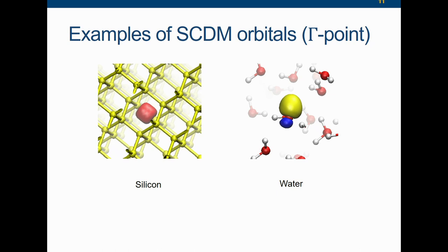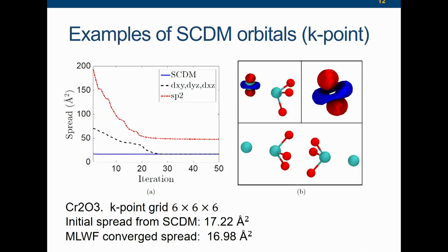This is only for the valence band. Here is a more recent result with k-points, from a system obtained from Steve Lewis and former group member Sinisa Cole. He was working on the chromium oxide example, which is kind of challenging because it's spin-polarized and you have competition between the d orbitals and the p orbitals. If you directly run Wannier90, it really depends on the initial guess.